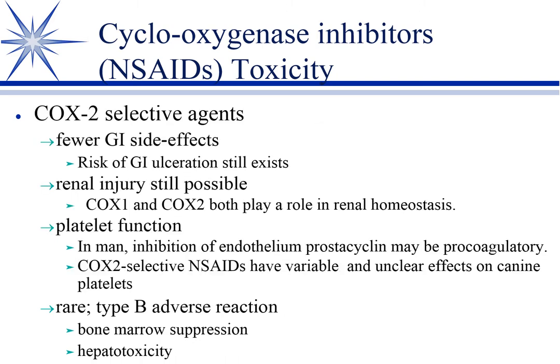Those were non-selectives. Most of what we use in small animals now are COX-2 selectives. COX-1 is involved more in constitutive housekeeping — mucus production, renal blood flow — while COX-2 is more inducible and associated with pain and inflammation. The idea was to make a selective COX-2 inhibitor to maintain the beneficial prostaglandin effects while inhibiting COX-2 to get rid of pain and inflammation.